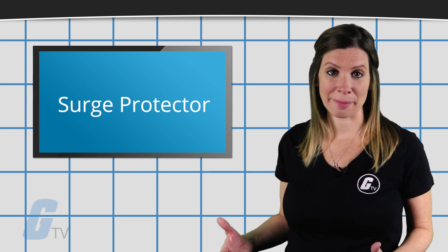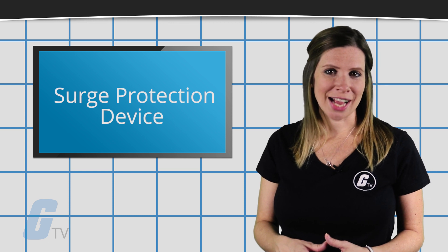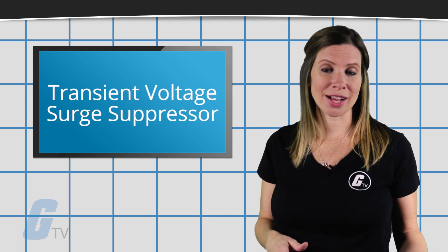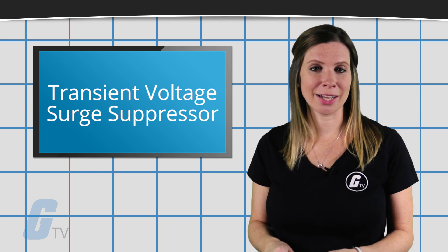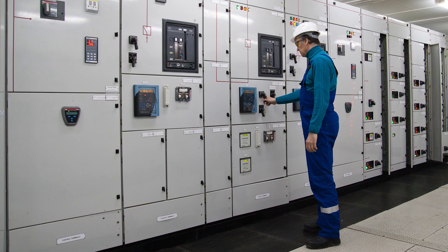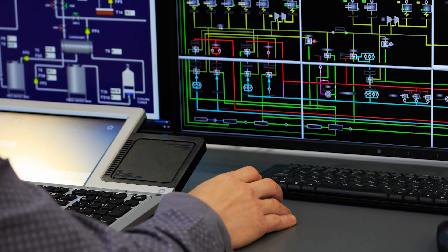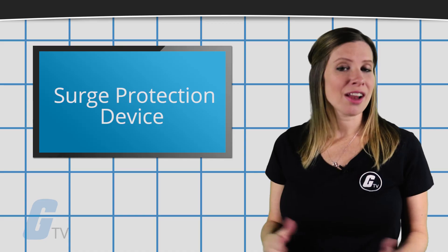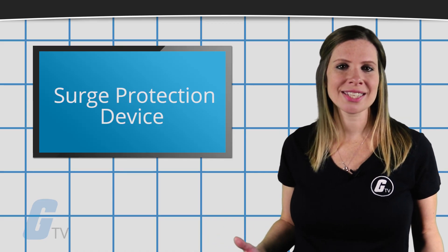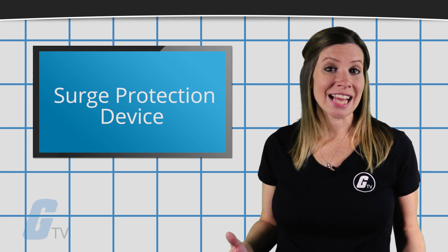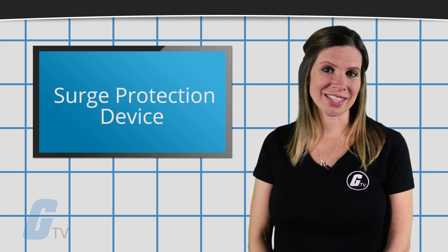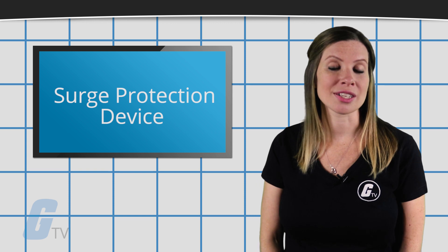The terms surge protection device and transient voltage surge suppressor are used to describe electrical devices typically installed in power distribution panels, process control systems, communication systems, and other heavy-duty industrial systems for the purpose of protecting against electrical surges and spikes including those caused by lightning.